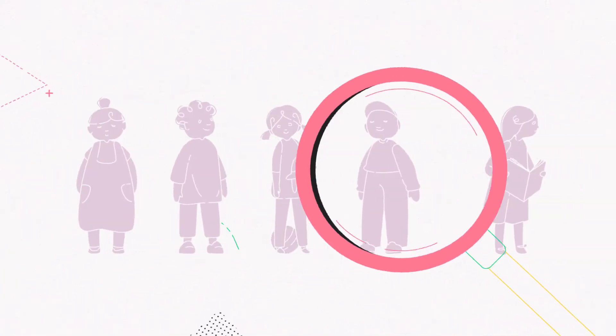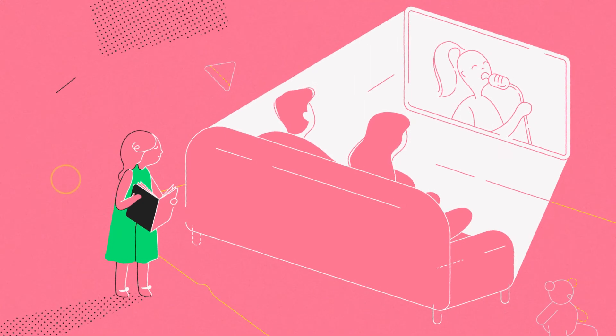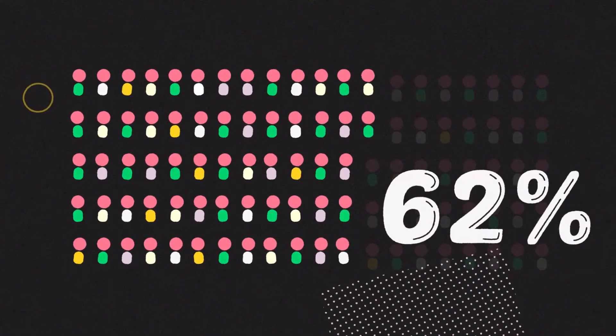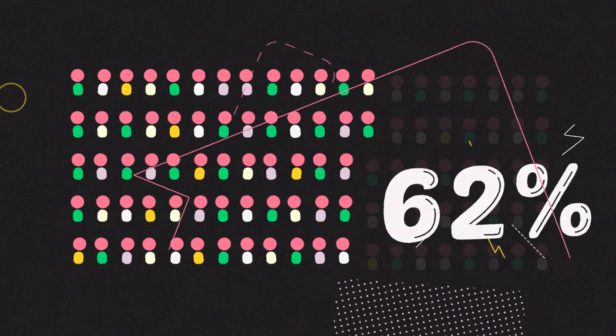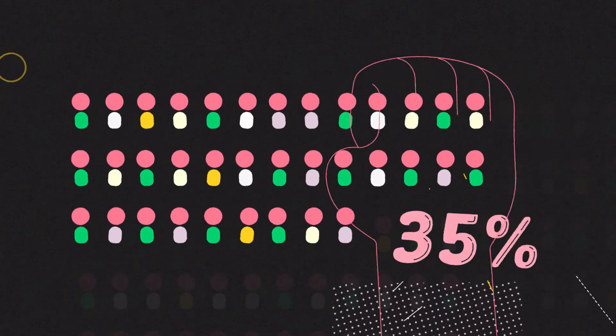Every fifth child in Georgia is not properly supported by adults. Furthermore, 62% of children aged one to four experience violence at home. Of these, 35% are exposed to physical punishment.